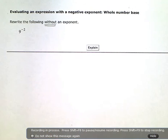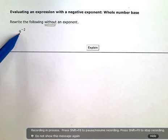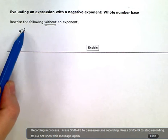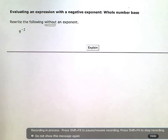Okay, so the 9 here is what we call the base. The exponent is the negative 2. I want to rewrite this without an exponent.